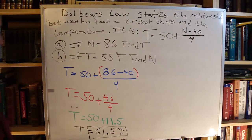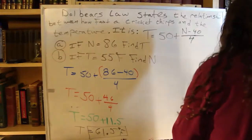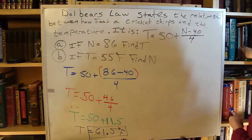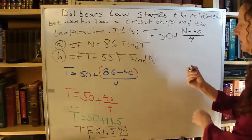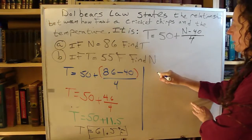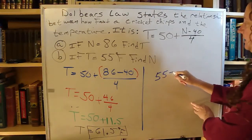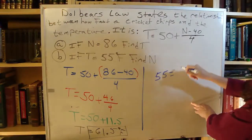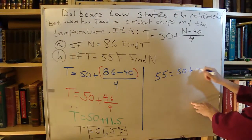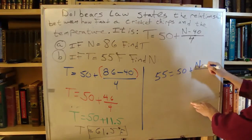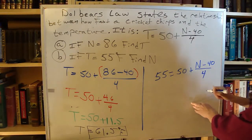Part B. They're asking us to replace T with 55. So we have 55 equals 50 plus that fraction there, N minus 40 over 4.